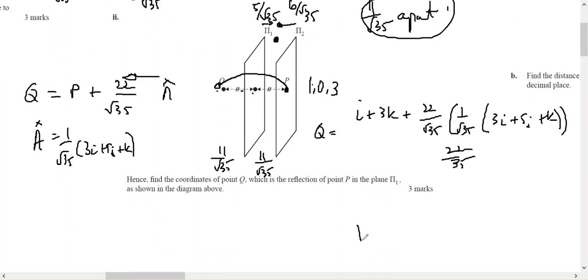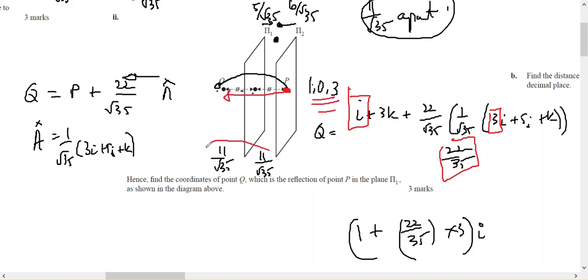So I'm going to have 1 plus 22 on 35 times 3 in the i, that is this plus this times 22 on 35. Because what I'm saying is, to get from P to Q, you are taking the point of P and you're adding two lots of root 35 in the direction of n.